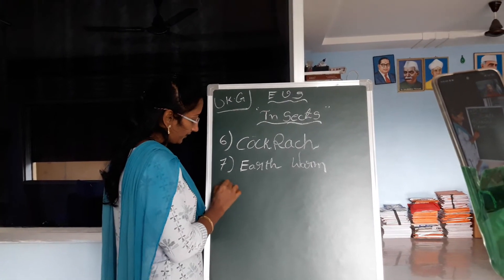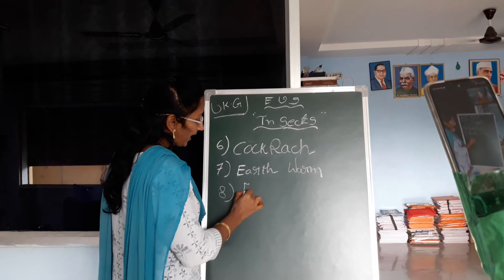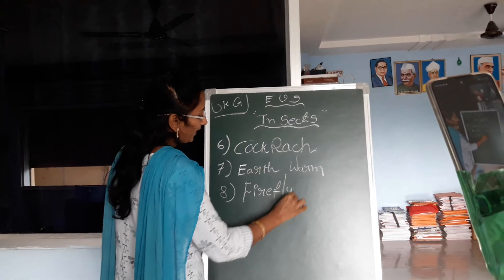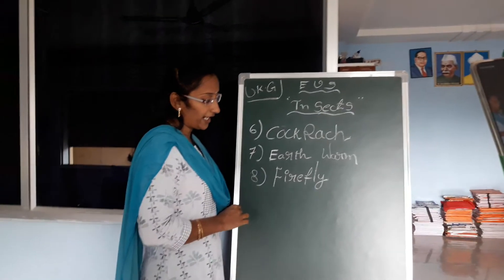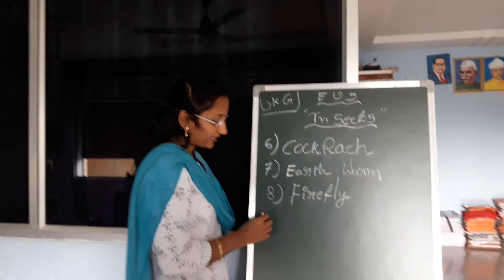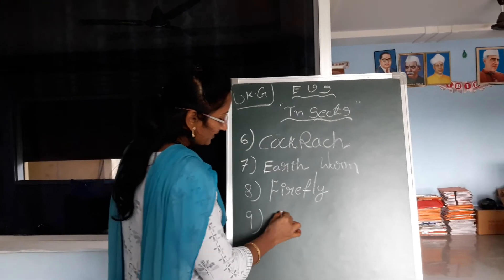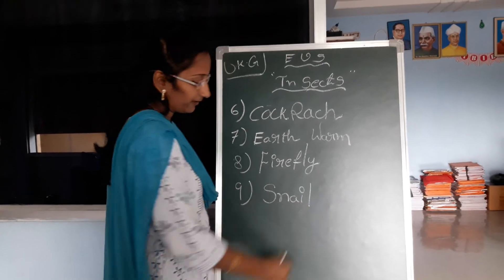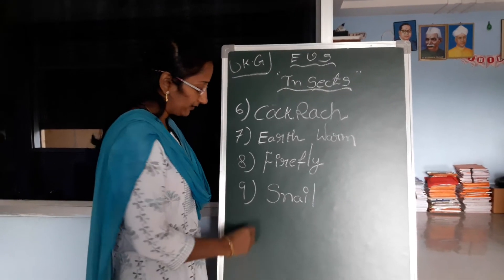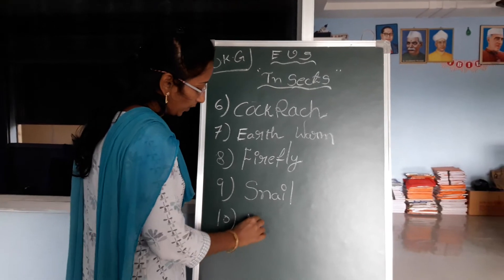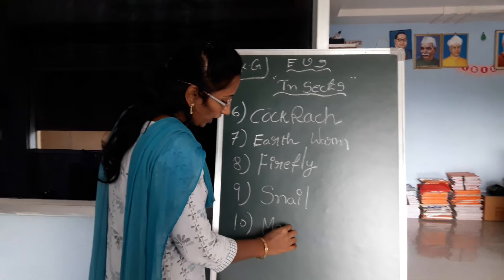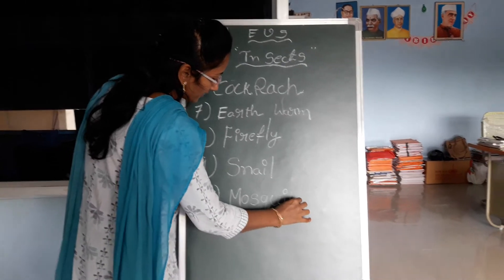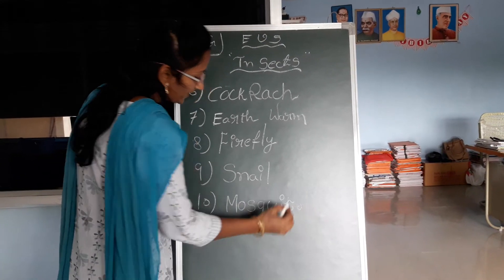Firefly. Next one is firefly. F-I-R-E-F-L-Y. Firefly. Next one is snail. S-N-A-I-L. It is called snail. Next one is mosquito. M-O-S-Q-U-I-T-O. Mosquito.